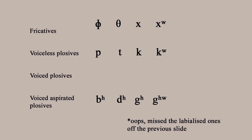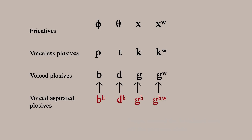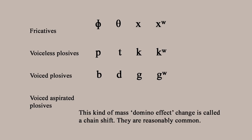Finally, the aspirated plosives became either voiced plosives or fricatives. This was all well and good, and it explained the majority of cognates between Germanic and non-Germanic languages, but there were still exceptions — and Werner's Law is an explanation for those exceptions.